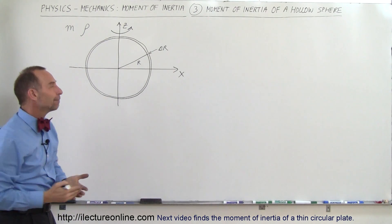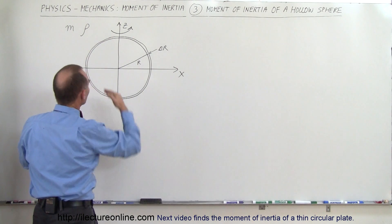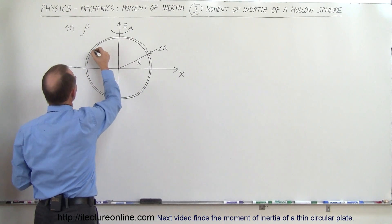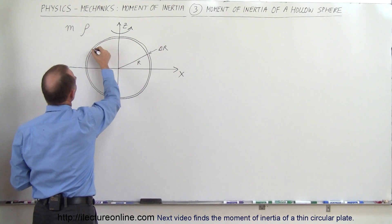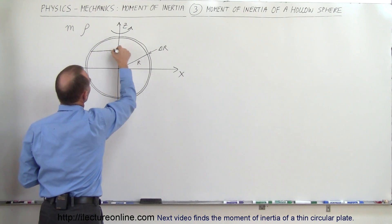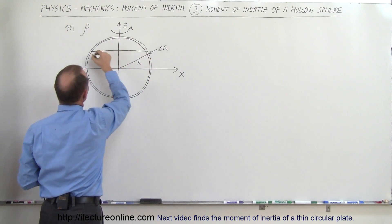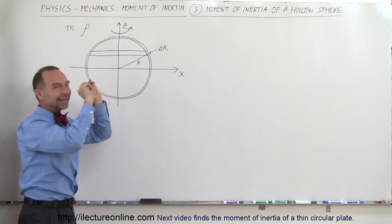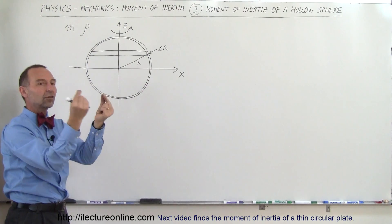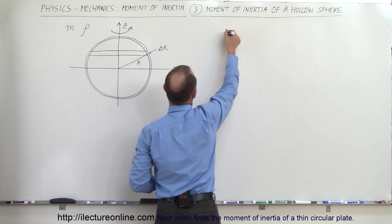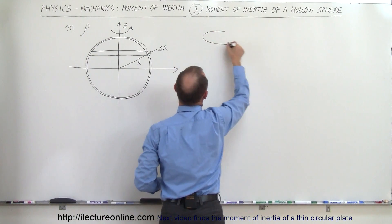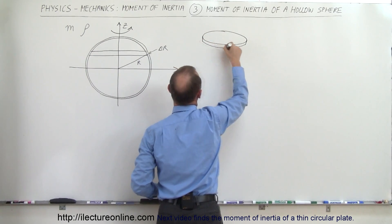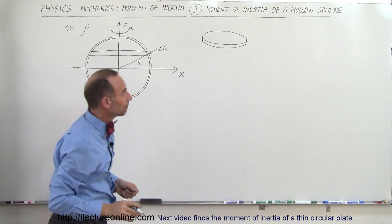So how do we do that? Well, let's say that we're going to slice it up into very thin little slices. If we do that, we'll end up with a little slice that looks like a thin little washer.